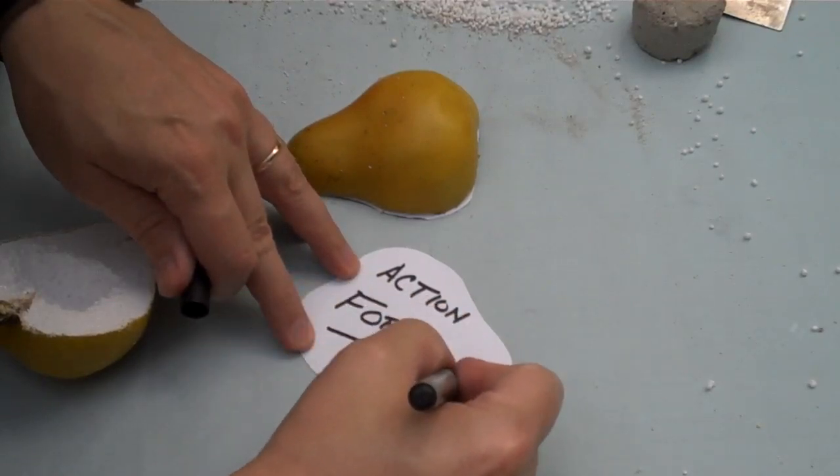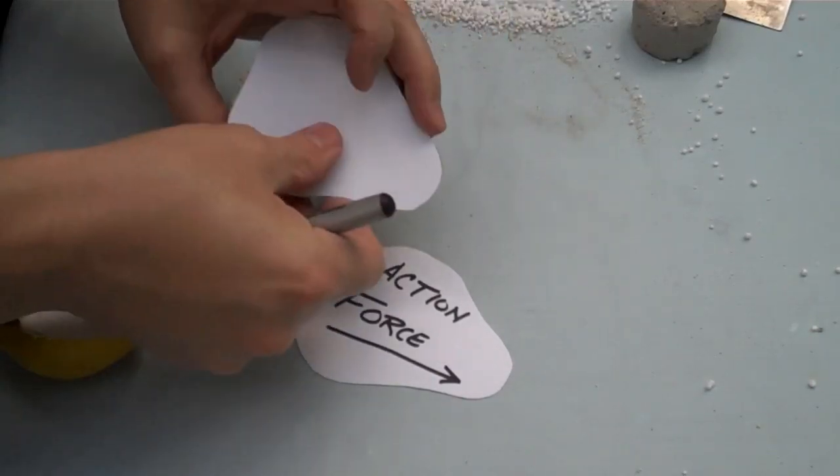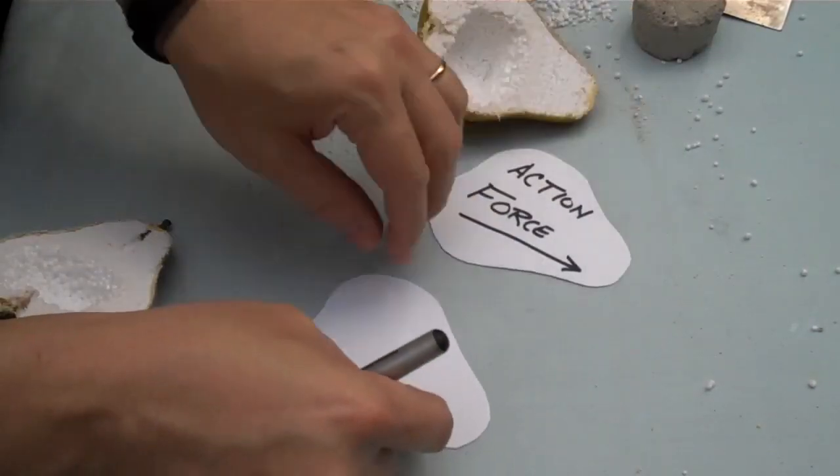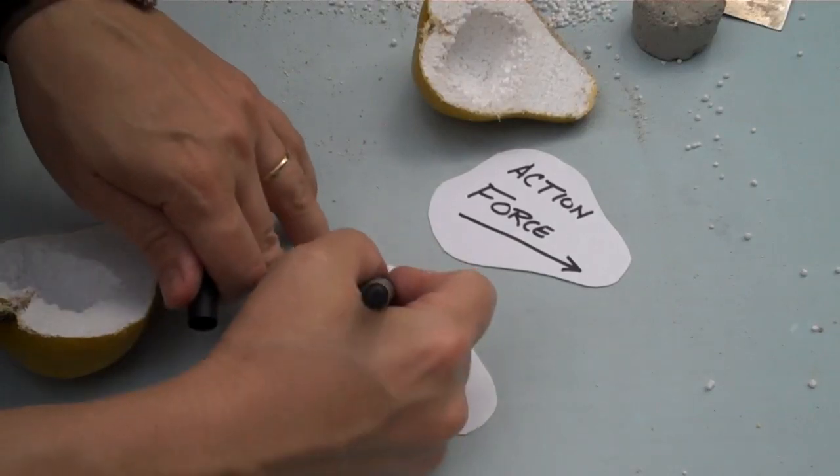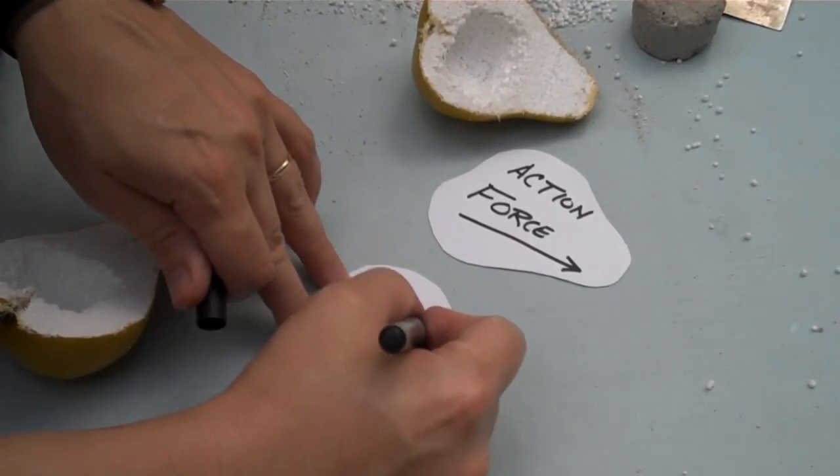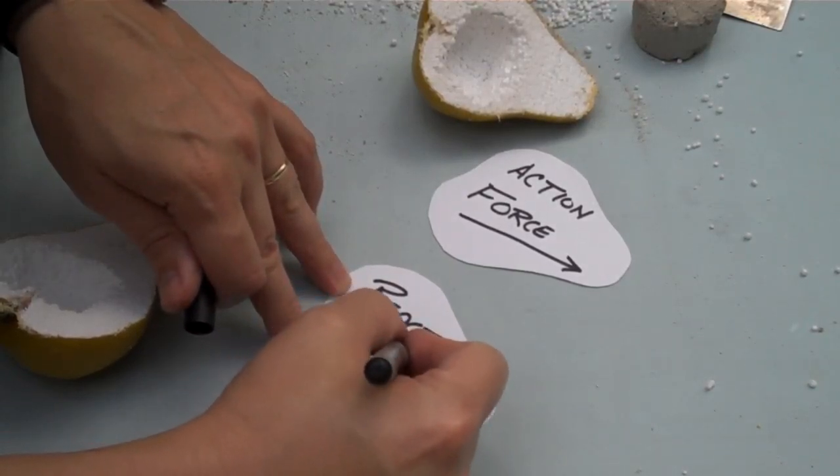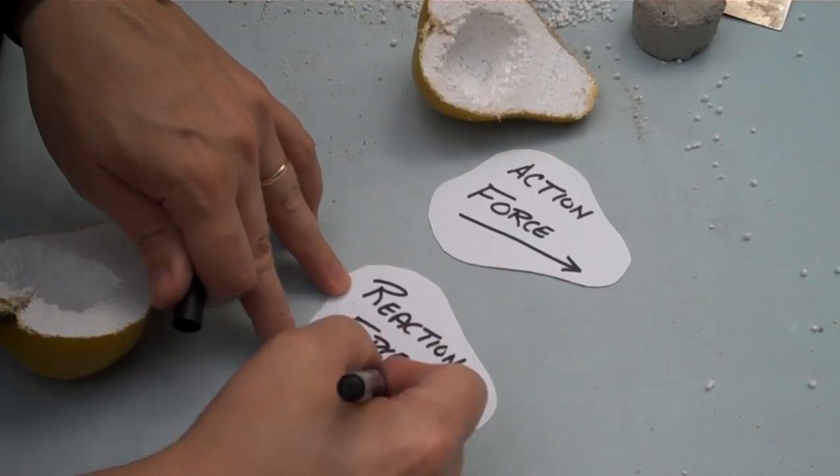Let me draw an arrow going one direction. And on the other side, over here on this one, I'll write reaction force. The bigger my letters, the easier it is to see what's going on.